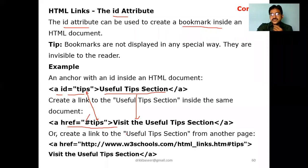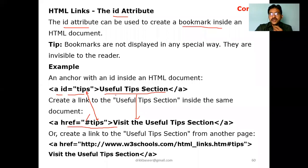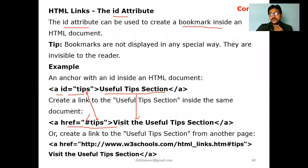A great example of id links is the 'Back to Top' button at the bottom of a webpage. When you click 'Top', it automatically goes to the top of the page because both anchor tags share the same id value. This is how we connect sections to each other in HTML code using id attributes.